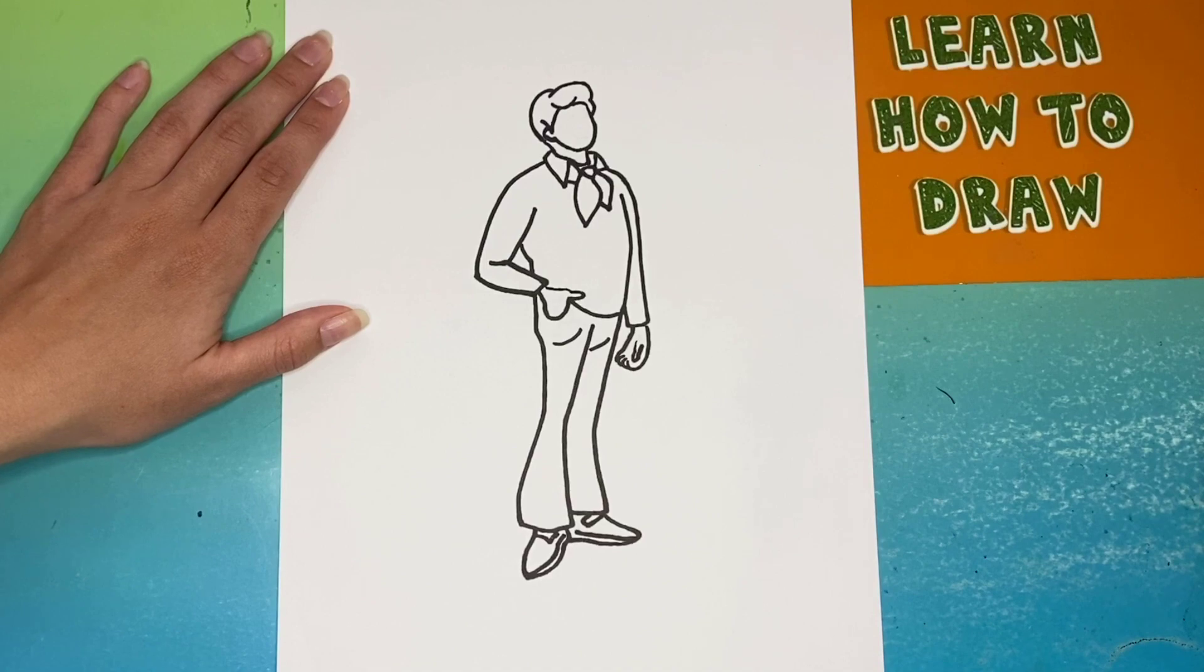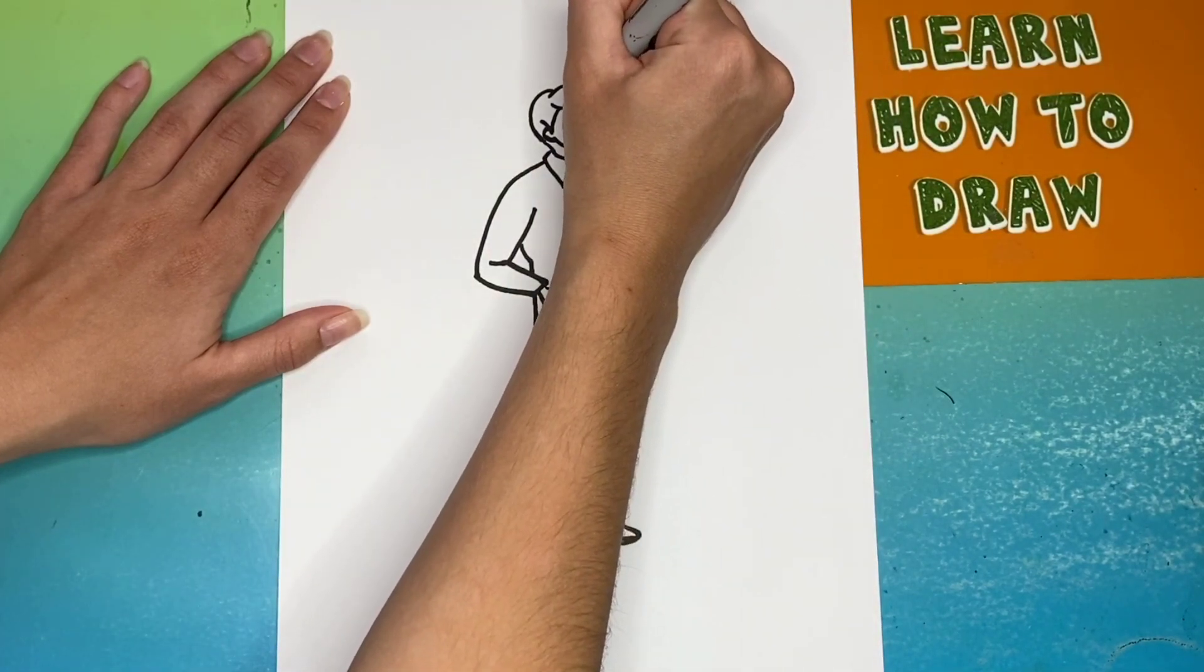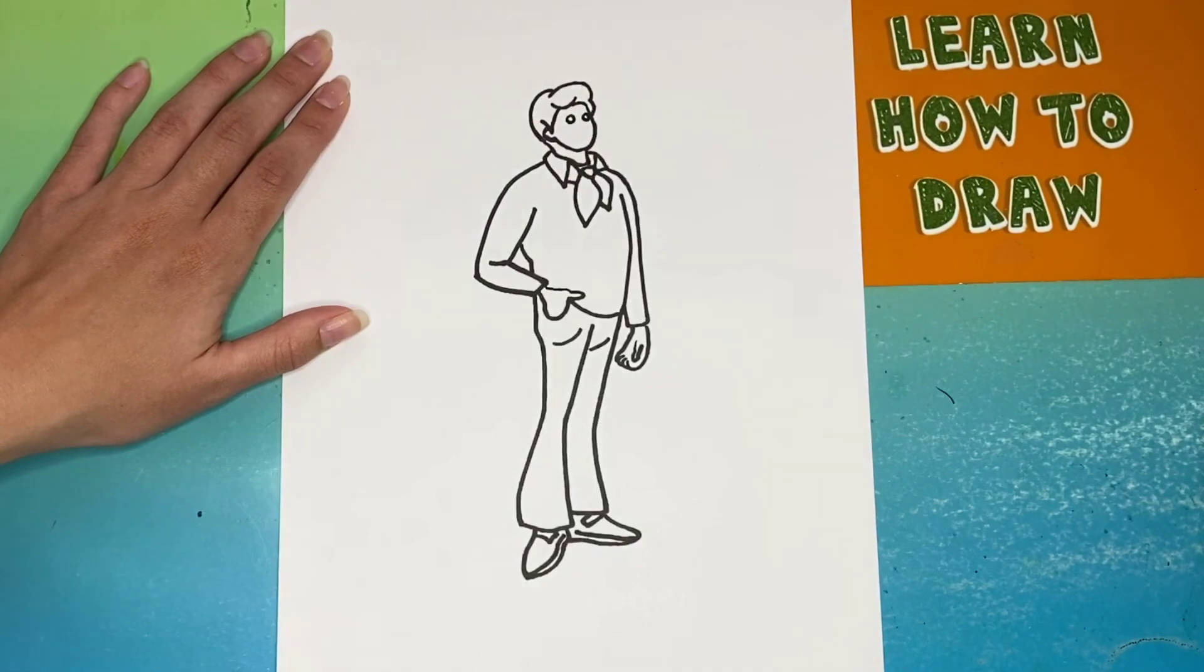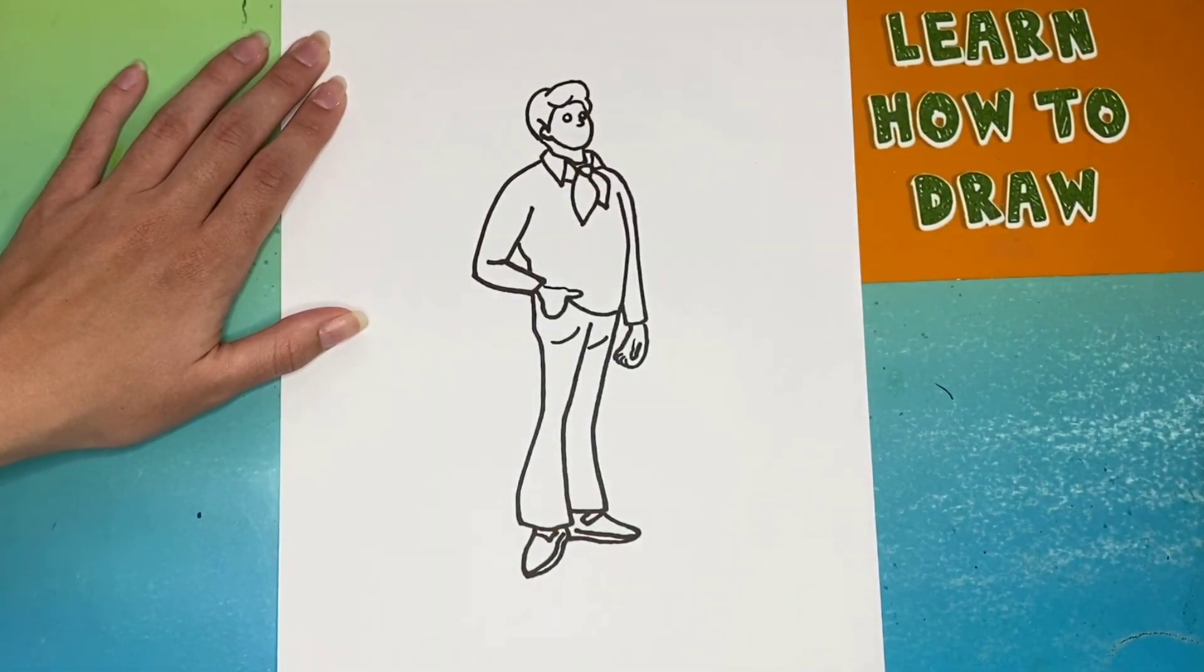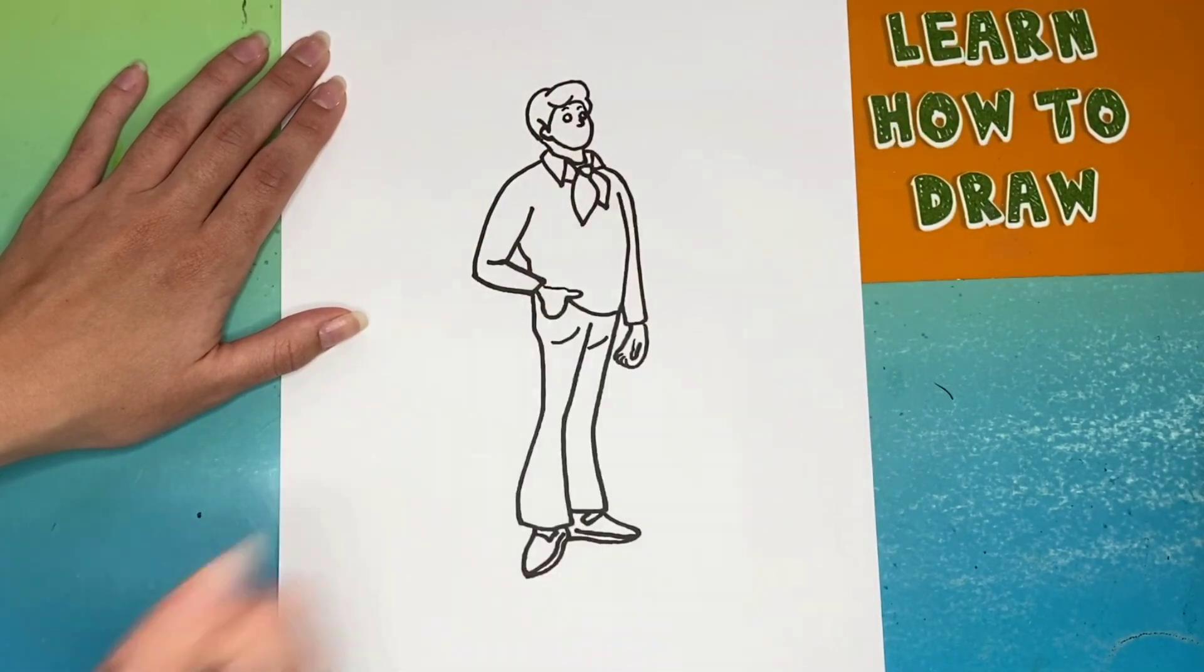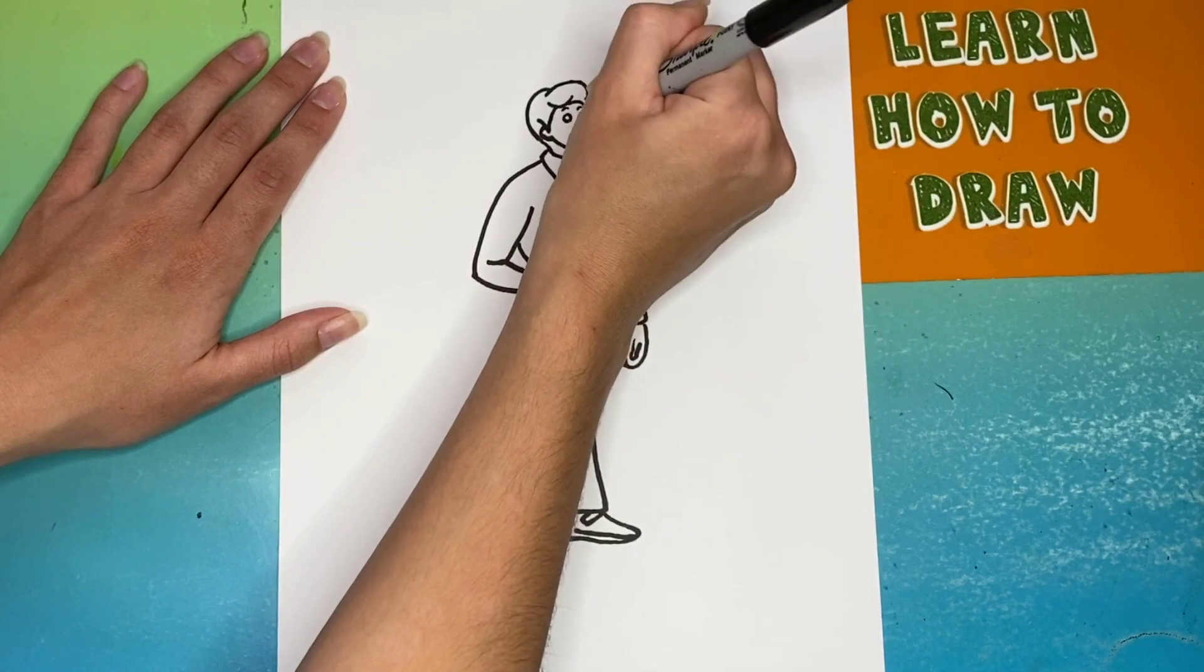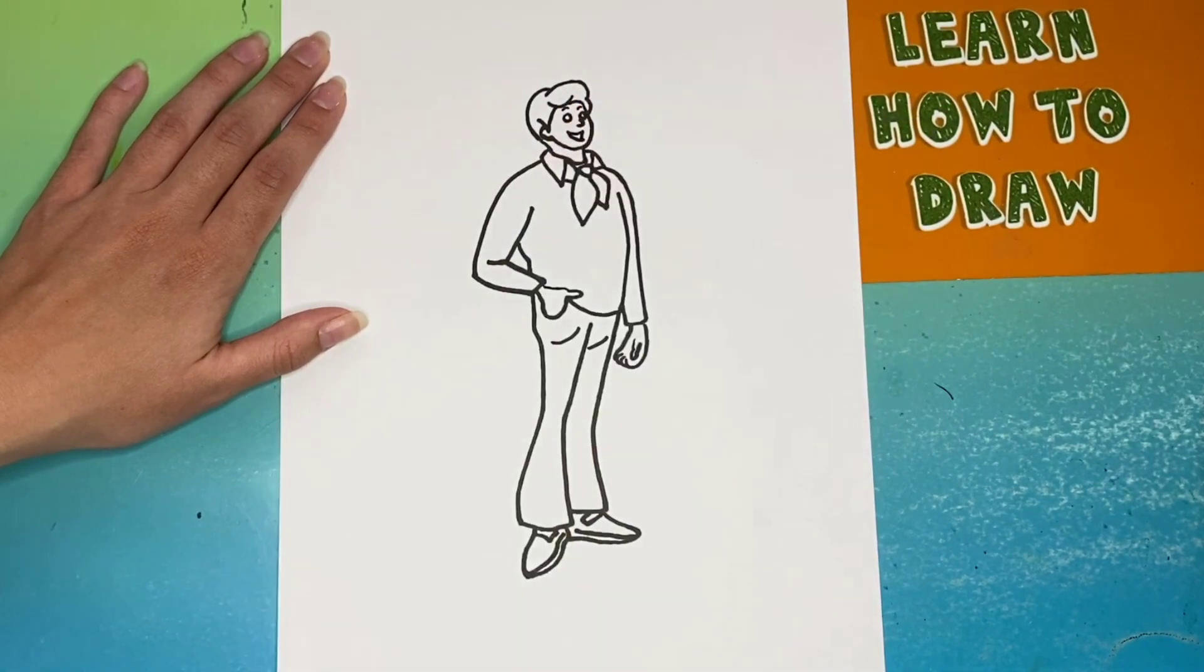Now the last thing we have to do is finish Fred's face. We're going to draw two small circles for the eyes. Then from the right eye, we will come down and make a small curve for the nose. Above the eyes, we'll make two small curved lines for the eyebrows. Next we're going to make the mouth and then add two small circles inside of the eyes for the pupils.